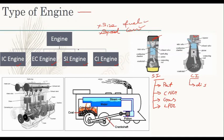This is a different type of compression. We have SI engine and CI engine. IC engine is an internal combustion engine, EC engine is an external combustion engine. SI engine and CI engine are both types of IC engines. You can see the combustion happens inside — there is a piston in the internal structure, and this is the internal combustion engine.